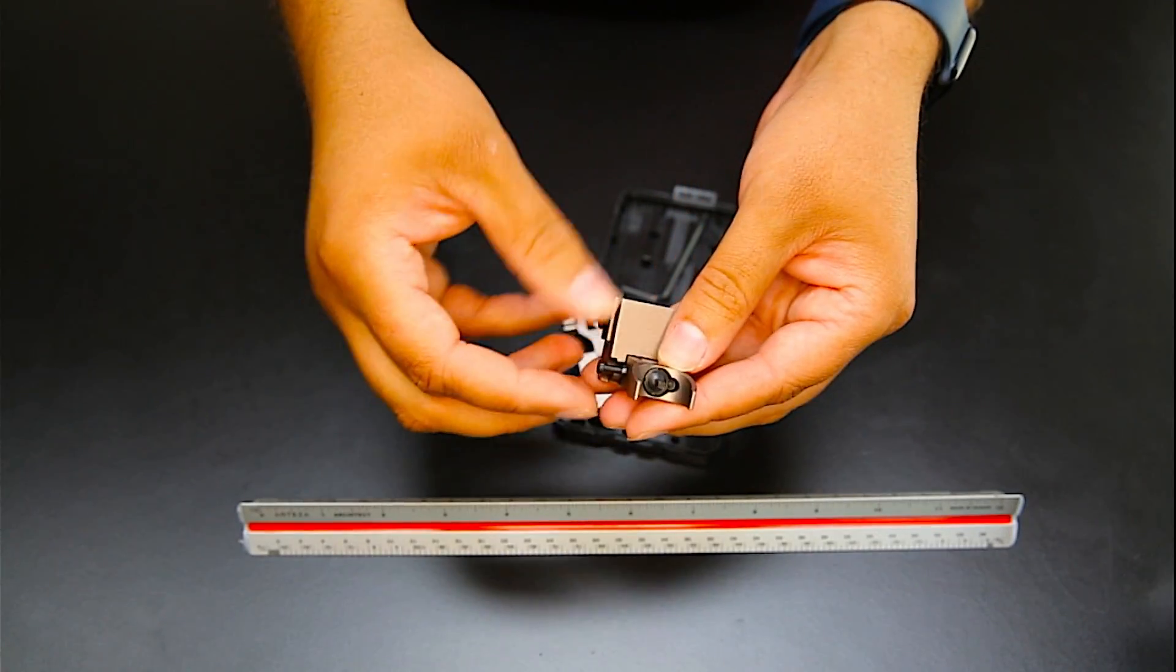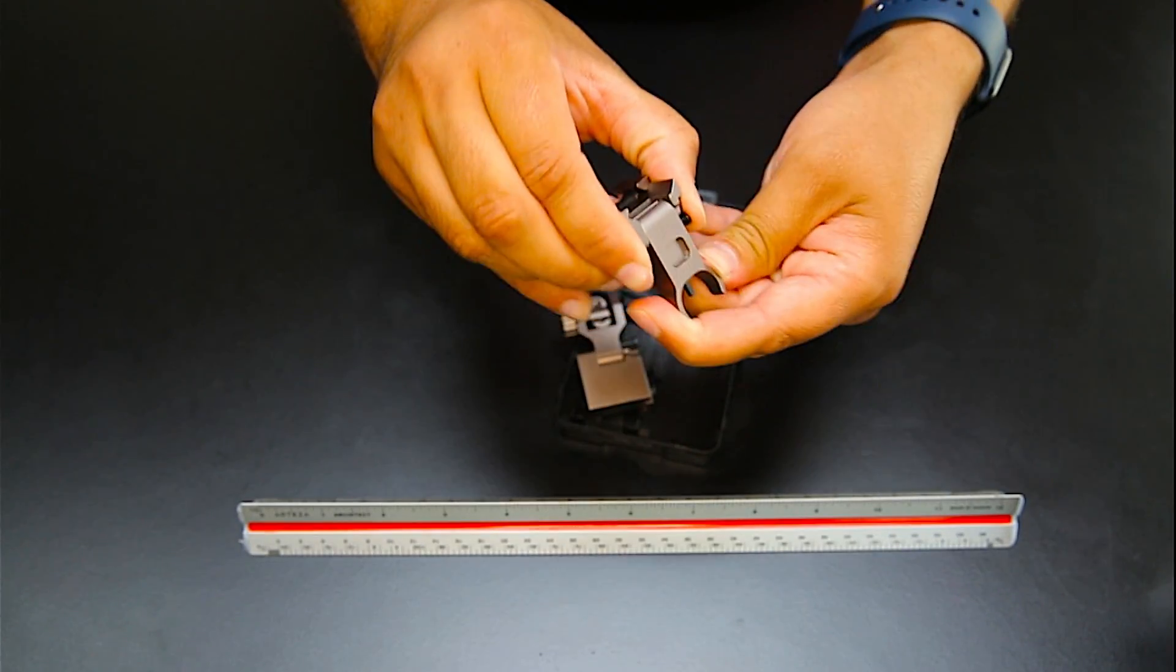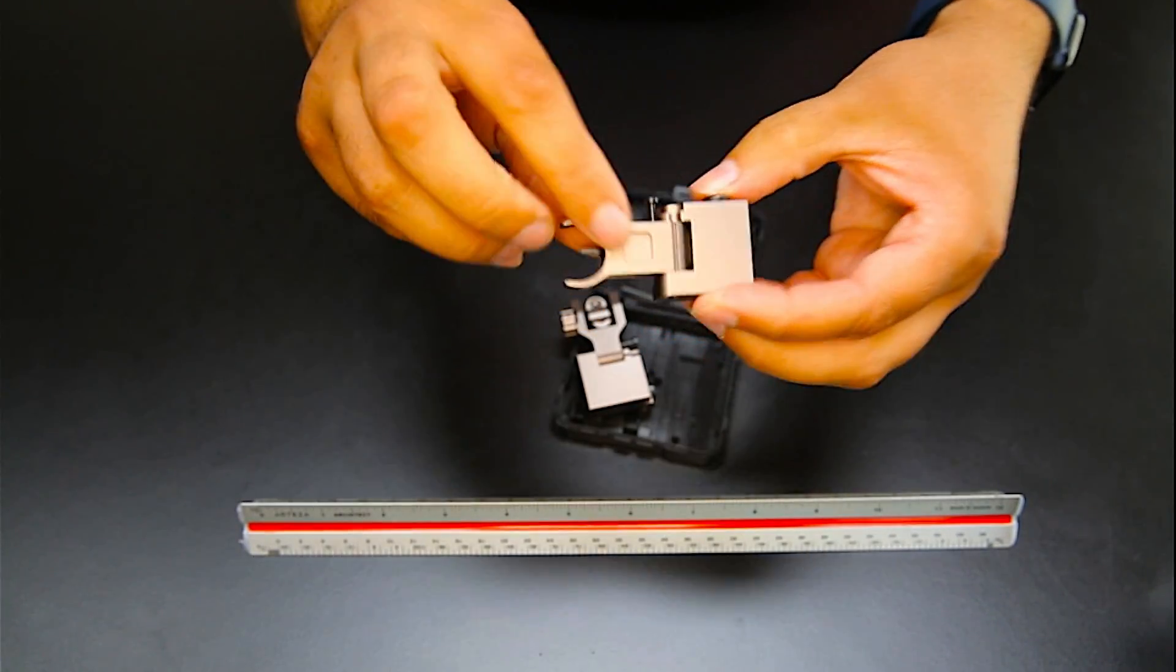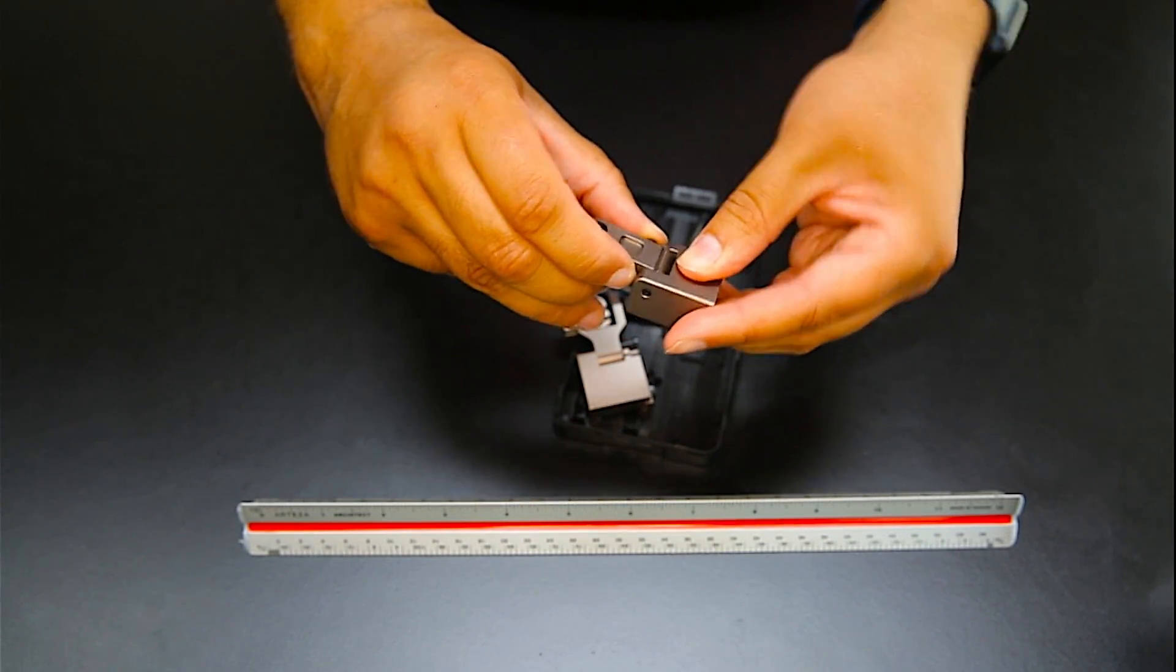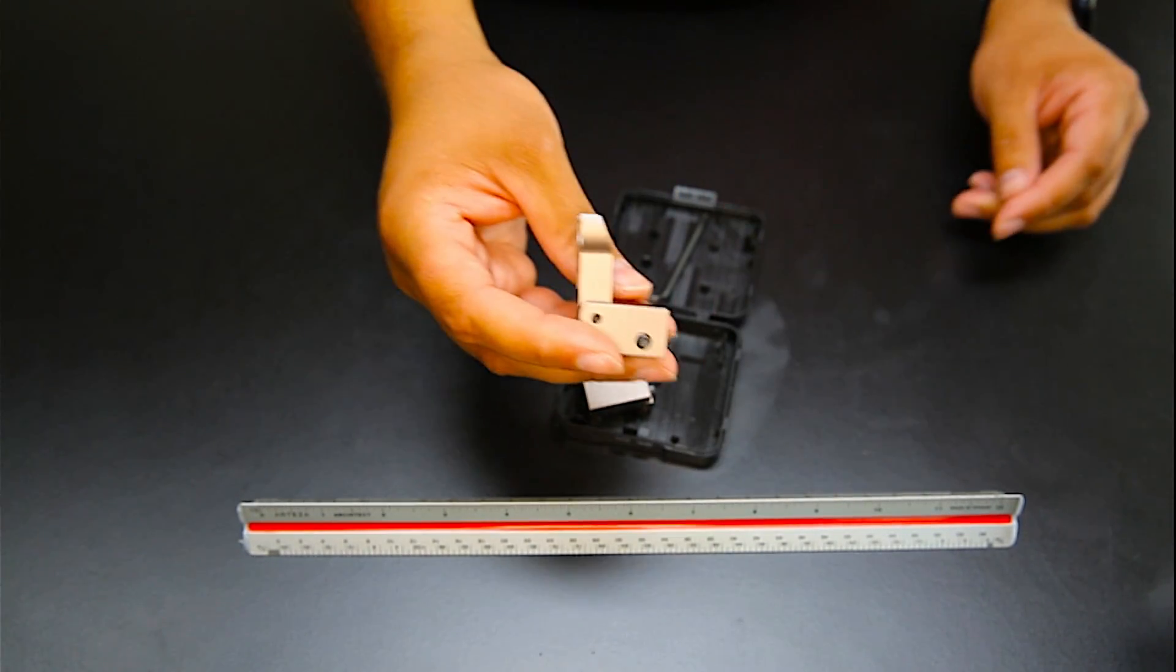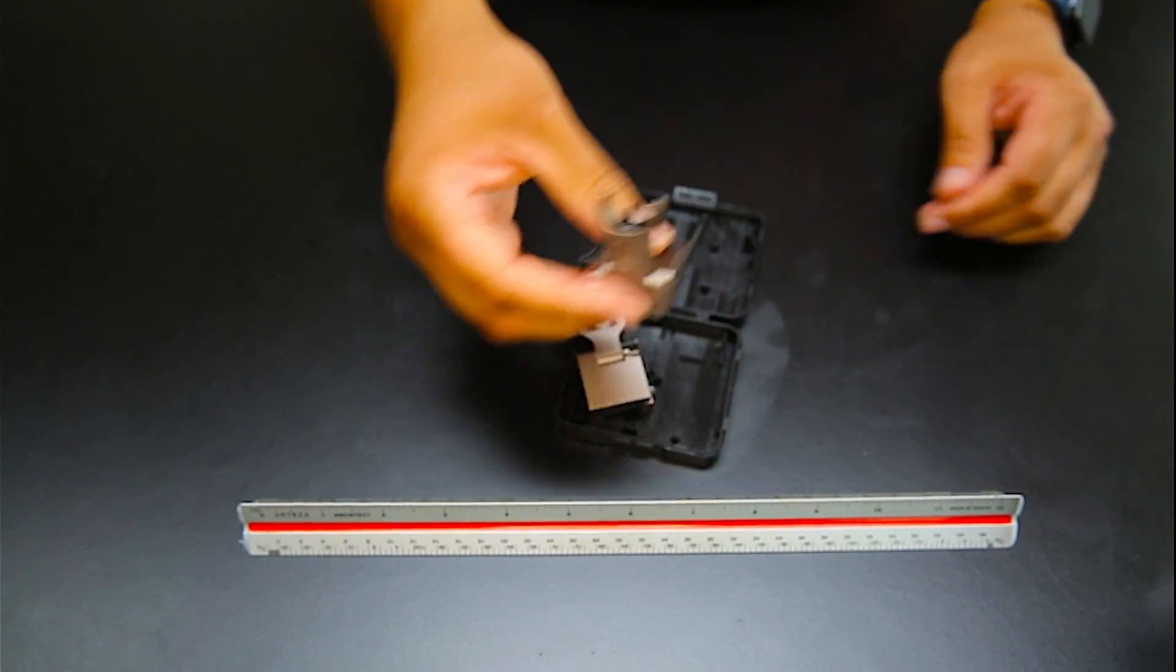Again, I really like that these go up and down so that you can use your other scopes, and if you run out of batteries or something you can flip these up real quick and have backup sights.